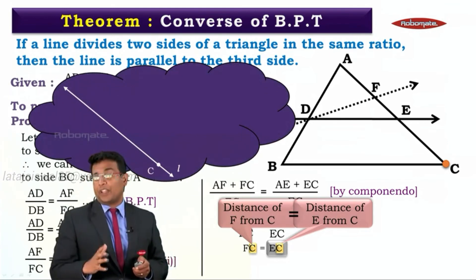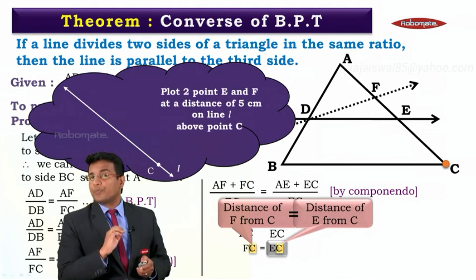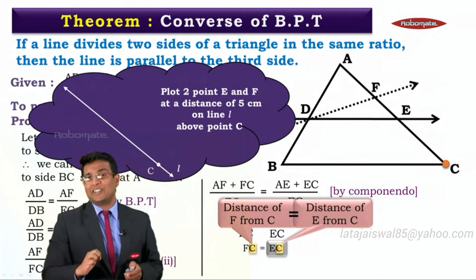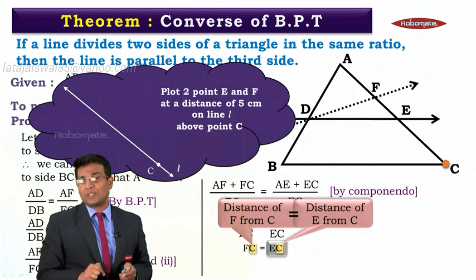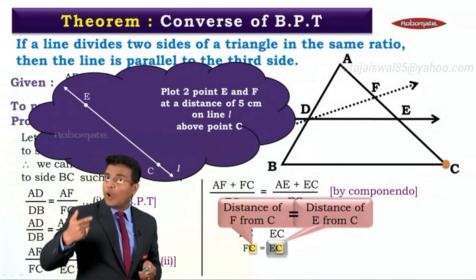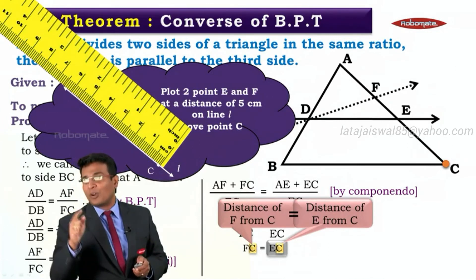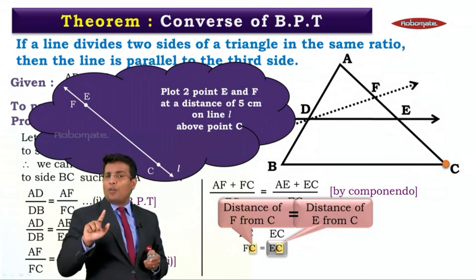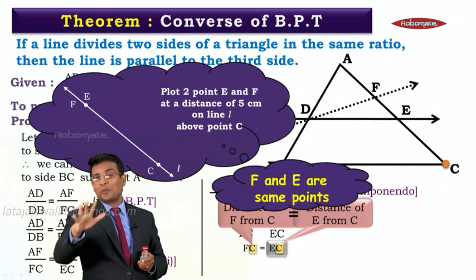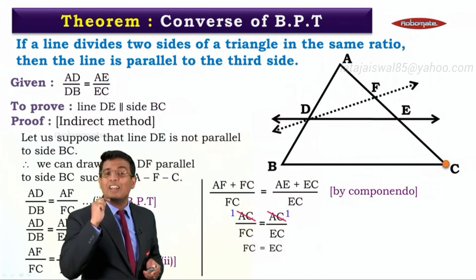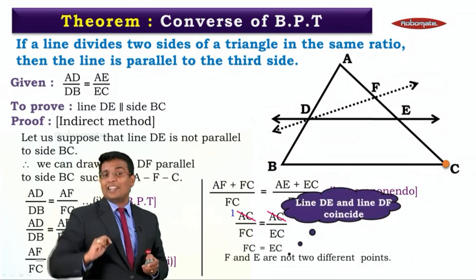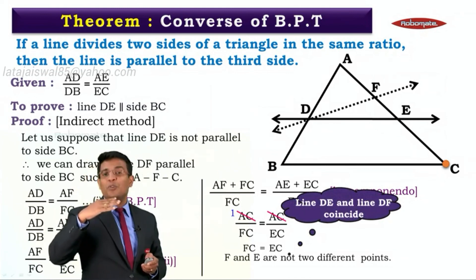To understand this better, take a line L with a point C on it. Plot two points E and F on this line at a distance of five centimetres from C. We take a scale, measure five centimetres from C, and get point E. We do the same again and get point F. What do you observe? F and E are the same point — they are not two distinct points. So from FC = EC we conclude that F and E are one and the same point.